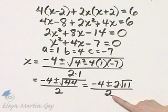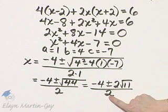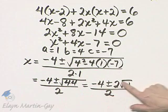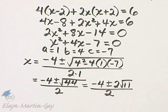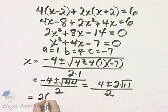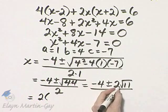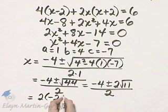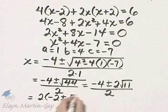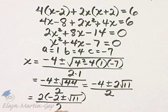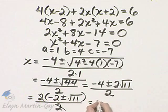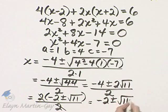Now here's where common mistakes are made. Notice I have a common factor of 2 in the denominator but I have a common factor also in the numerator yet not yet factored out. So you need to take a step and factor out a common factor of 2 in each term in the numerator. So that's negative 2 plus or minus square root of 11 all over 2. And now you can divide out that common factor. We have now negative 2 plus or minus square root of 11.